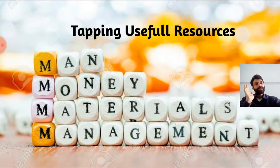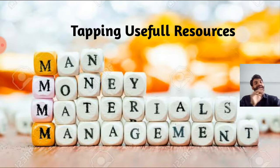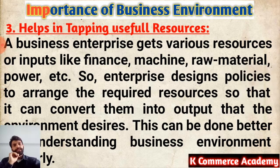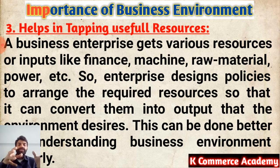So, the first importance is that business environment helps us identify opportunities; the second is identifying threats. The third importance is tapping useful resources. Business environment helps us in tapping, getting, and allocating useful resources in a proper manner — the three Ms: man, money, and material and their management. For example, as soon as COVID-19 spread, pharmaceutical companies allocated some resources to their R&D to develop a new vaccine for the pandemic.